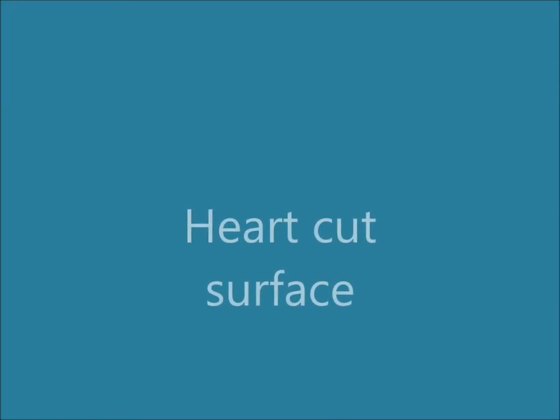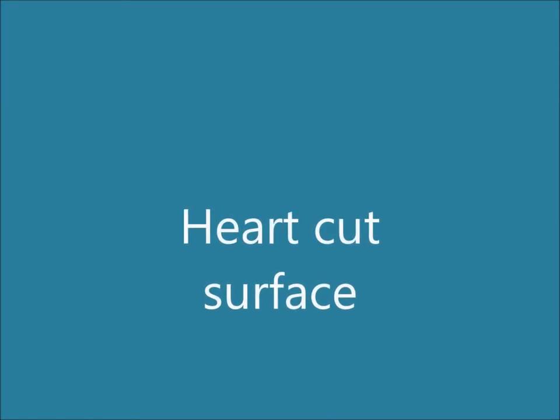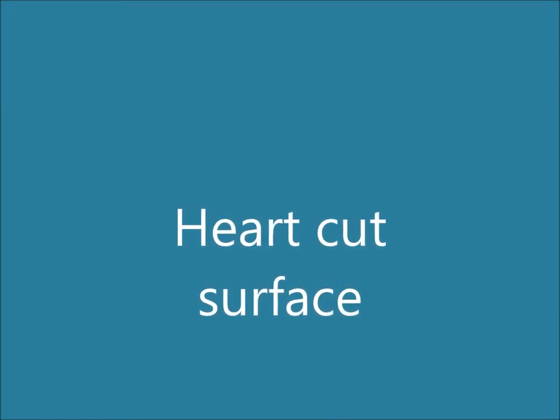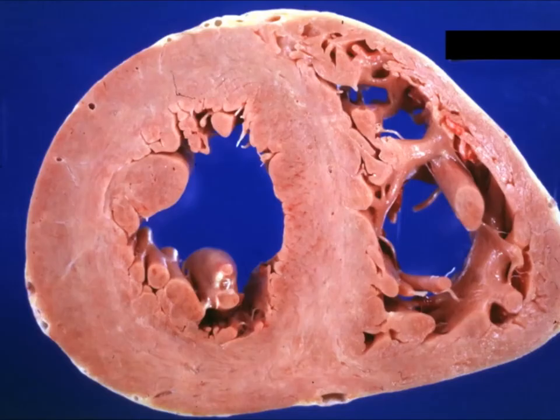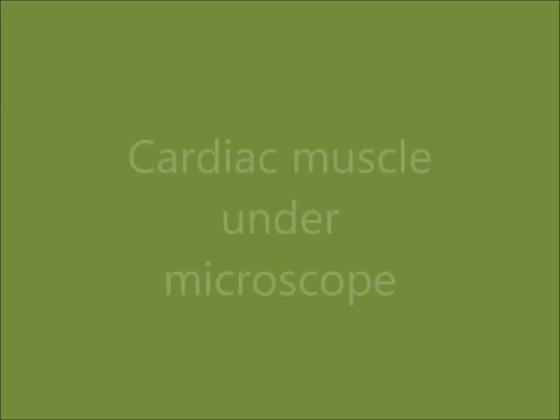First we see the normal heart cut surface. This is the cut section of the heart showing the left ventricular thicker wall and right ventricular thinner wall. This is another specimen showing a slightly hypertrophied left ventricular wall, but otherwise there is no discoloration.